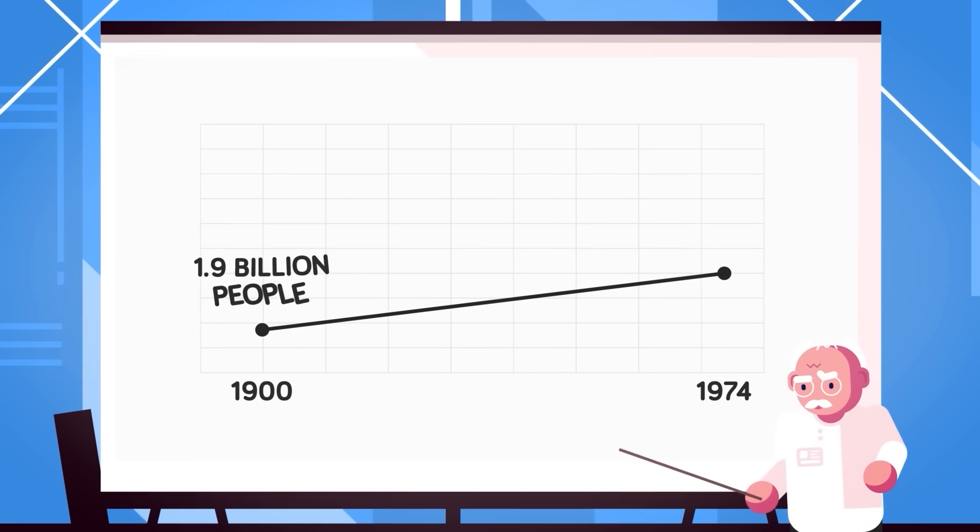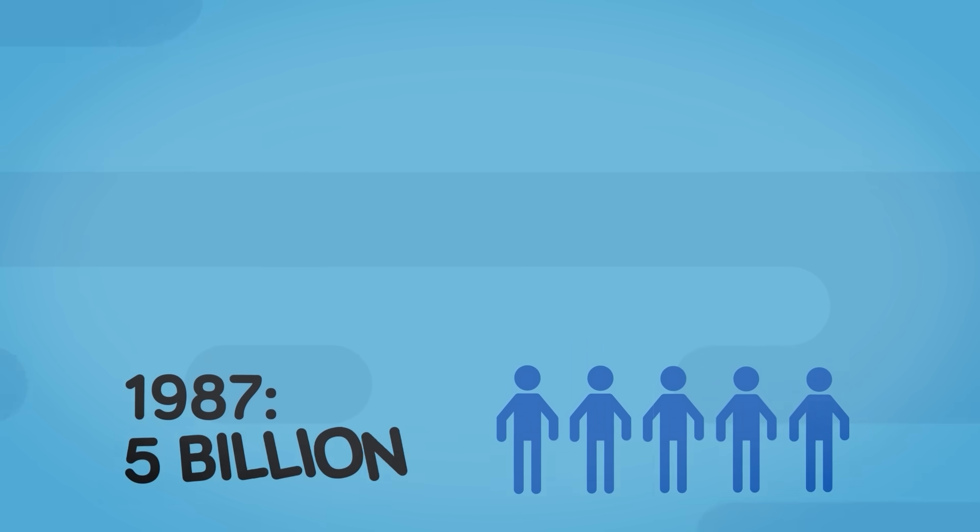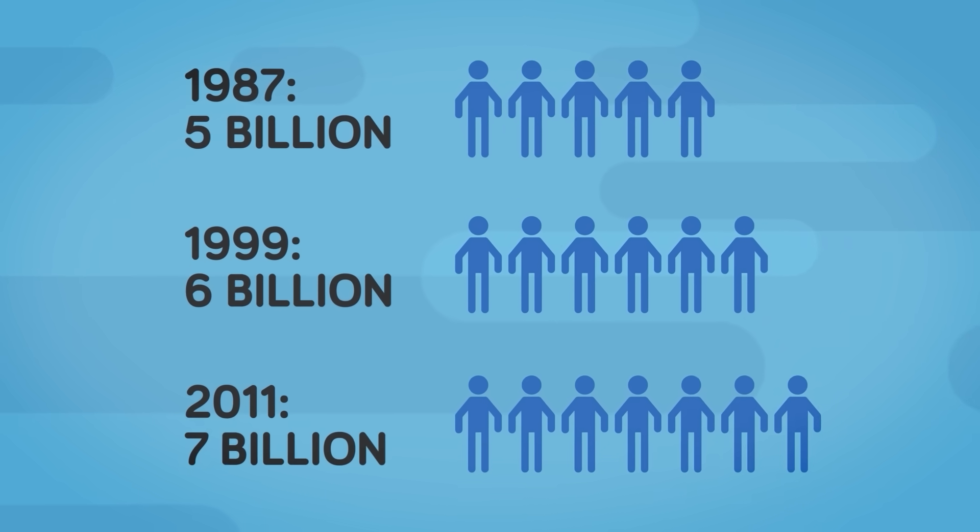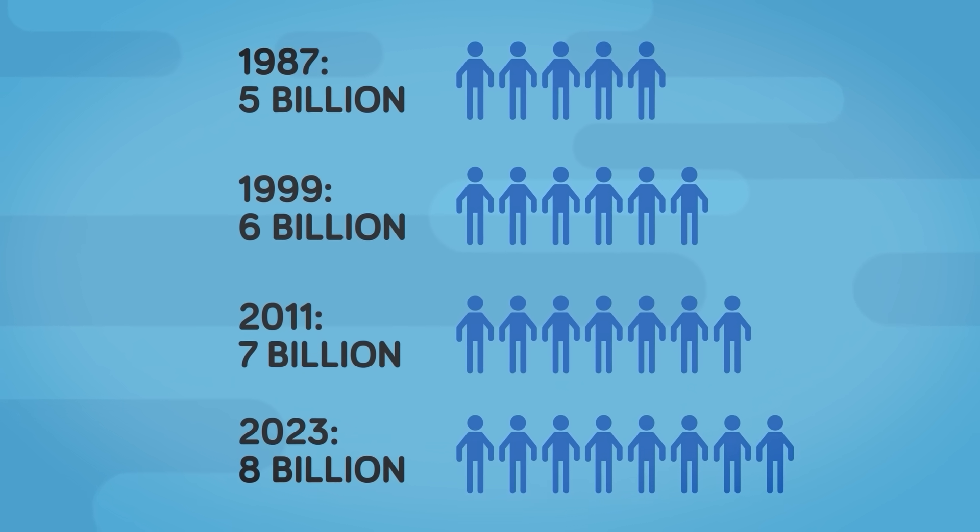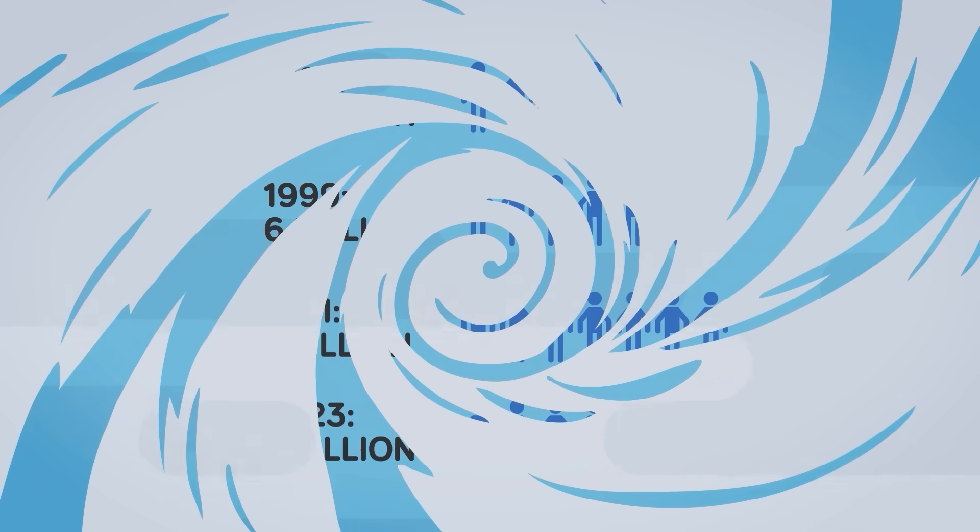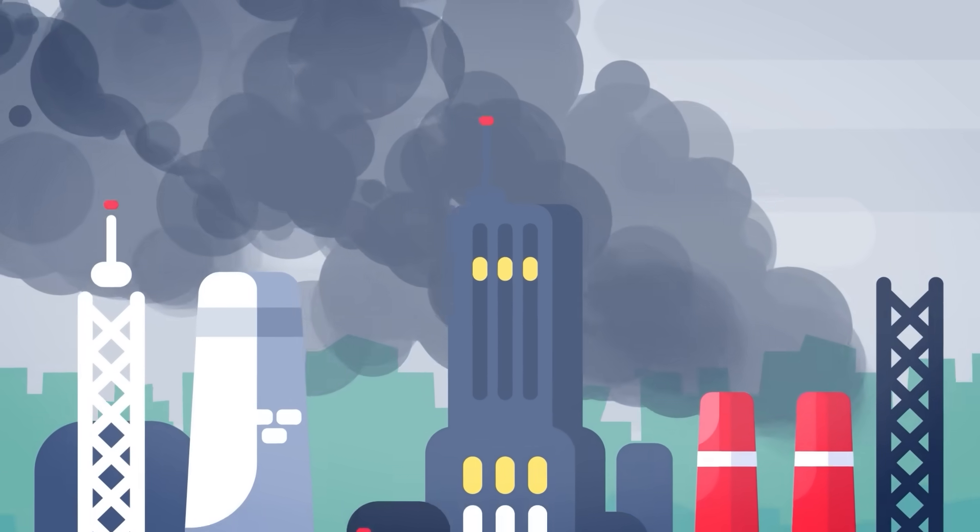Seventy-four years later, the world population doubled to 4 billion. In 1987, humanity hit 5 billion. 99, 6 billion. 2011, 7 billion, and only 12 years later, the year 2023, there are over 8 billion people on Earth. Needless to say, the rapid population growth and need for energy and resources to support such a large population have put a huge strain on our planet.